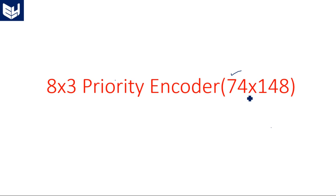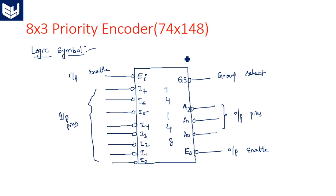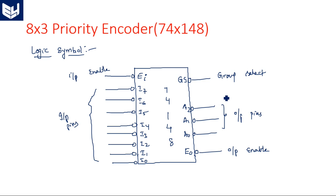You may be asked to explain the logic function of IC 74148 and write the VHDL code for it. We have already discussed the logic diagram in the last class. It consists of eight inputs and three outputs, along with one enable input, one enable output, and a group select pin. Remember, all these pins are active low pins.